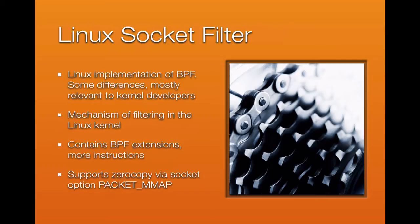Examples of these Linux BPF extension instructions include the modulus operator and the ability to filter based on CPU. Another big difference in the Linux socket filter implementation is packet mmap — a socket option used to enable a zero-copy memory-mapped buffer for packet capturing.